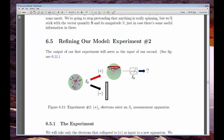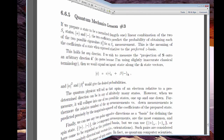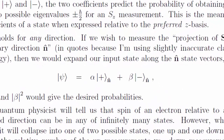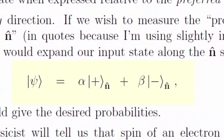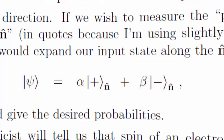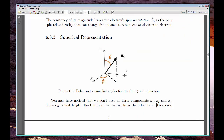We do a few experiments and see how we're forced to change our model. In fact, when we're done, we will have had to abandon our original picture entirely and replace it with some unintuitive math. And that math is quantum mechanics — spin-1/2 quantum mechanics, to be precise.